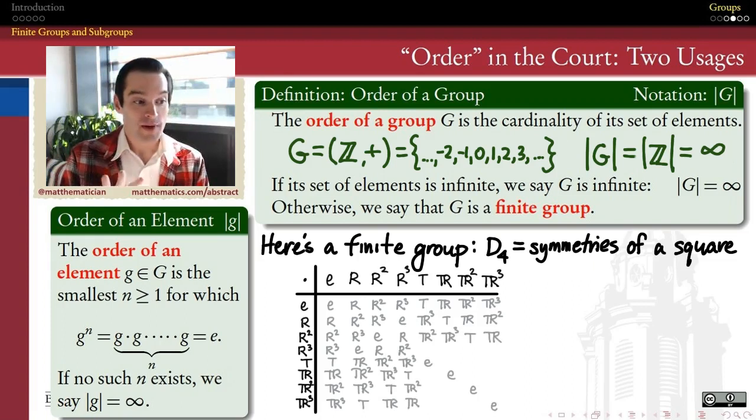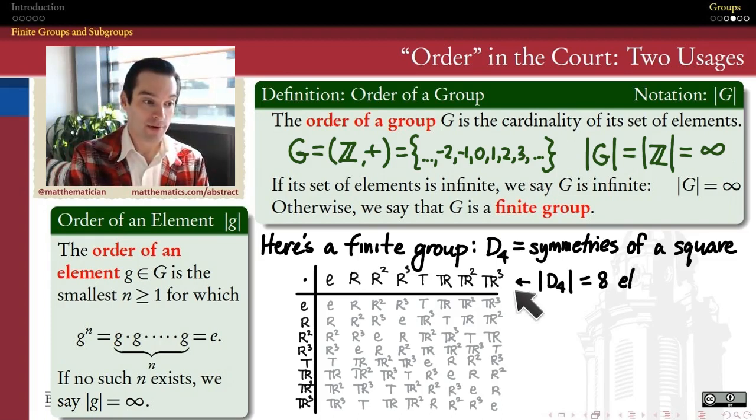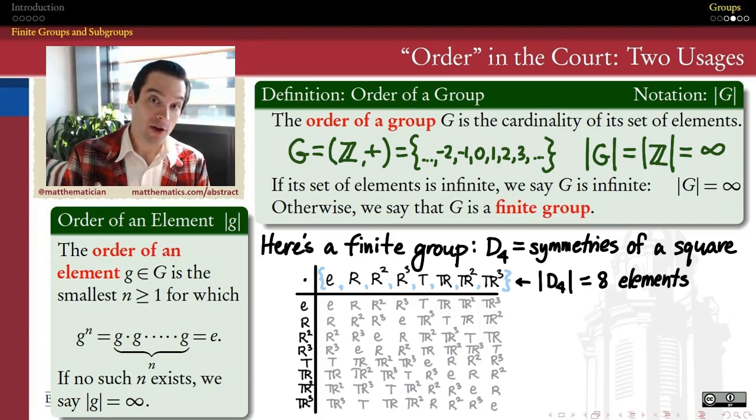First thing we notice is how many elements are there in this group? Well, all we have to do is count across. The order of this group, the number of elements, is 8. And that, by the way, is the reason why some authors will call this D8 instead of D4. They'll call it the dihedral group of order 8. I prefer D4 because it reminds you of the geometry of where this came from. It's the symmetries of a regular four-gon, i.e. a square. So, these are the elements in my group. There's 8 of them. So the order of this group is 8.